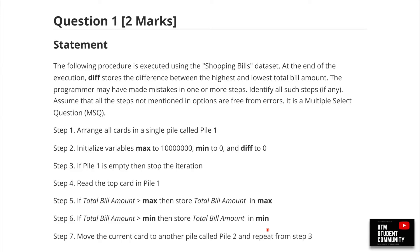Without further ado, let's jump right into Question 1. The statement reads: the following procedure is executed using the shopping bills dataset. At the end of execution, 'diff' stores the difference between the highest and the lowest total bill amount. The programmer may have made mistakes in one or more steps — identify all such steps, if any. Note that there could be a case where none of the answers are correct, and you can pick the option 'no mistake.'